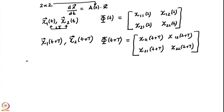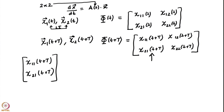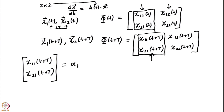I can write the first column of φ(t+T) — it is basically χ₁₁(t+T) and χ₂₁(t+T). Now this is some vector; it is a solution vector to the 2×2 system, and because this is a linear system it can be expressed as a linear combination of the 2 linearly independent solutions that we have. I expect this — it is a 2×2 system, there can be at most 2 linearly independent solutions. I have now 3 solutions, so I can express the third one as a linear combination of the first and second linearly independent solutions.